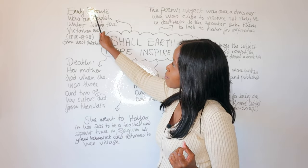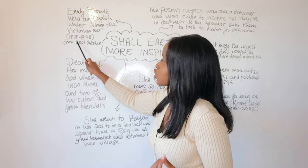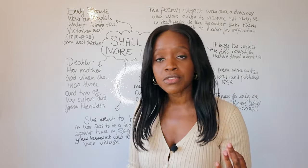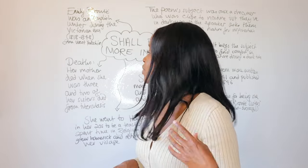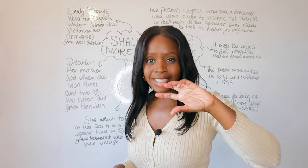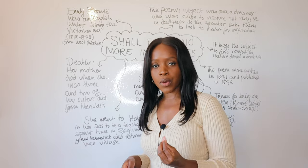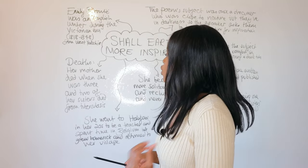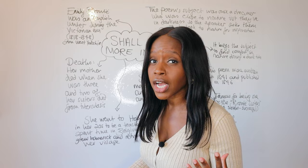Emily Brontë is an English writer who lived during the Victorian era. She lived between 1818 and 1848 and was specifically from a fairly small village in West Yorkshire. One thing to remember when it comes to Emily Brontë — and this also relates to the themes of loss and depression touched on within this poem — is that she was no stranger to death and tragedy. She experienced very significant deaths from very early on in her life.